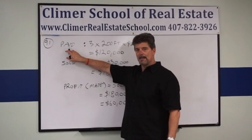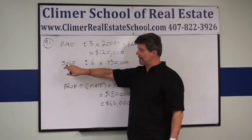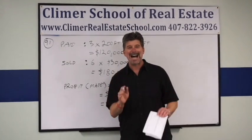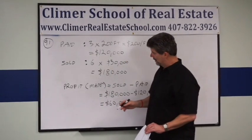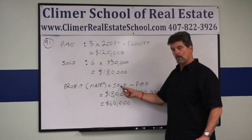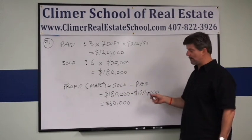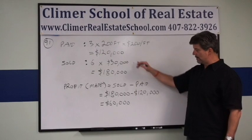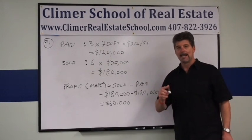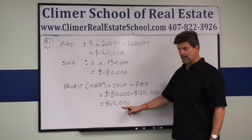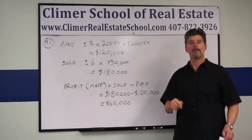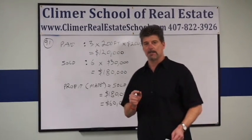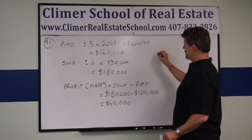That's how much she paid, and $180,000 is how much she sold. What she made in profit dollars was what she sold it for minus what she paid for it: $180,000 minus $120,000. Her profit in dollars is $60,000. However, the problem asked for her percentage of profit.